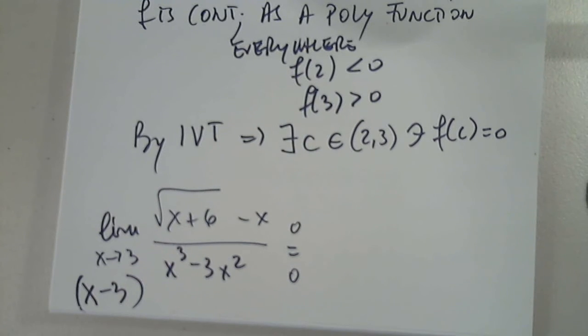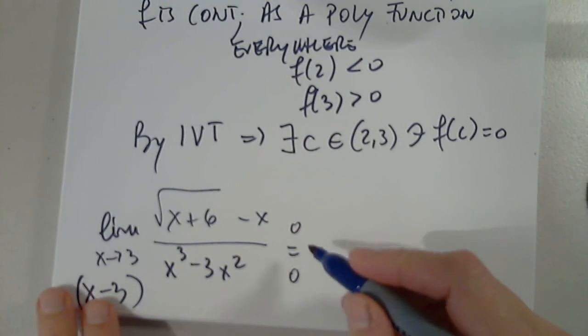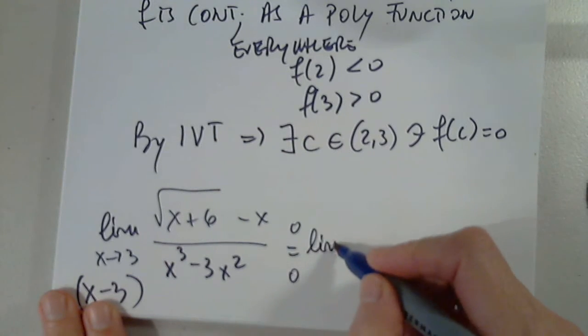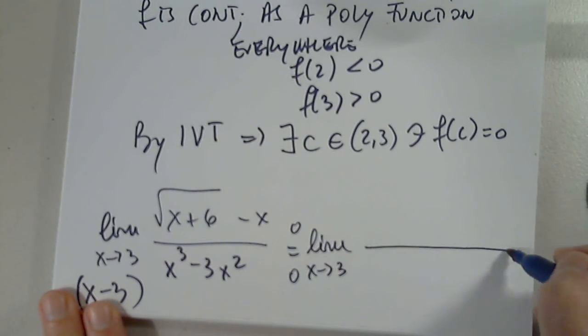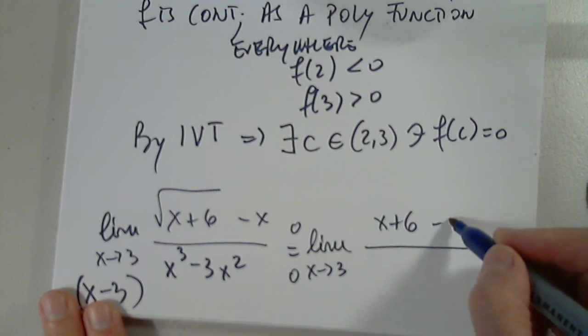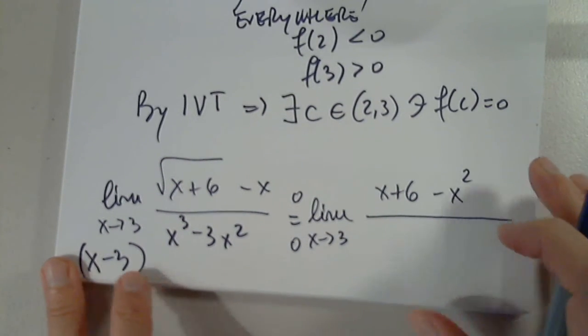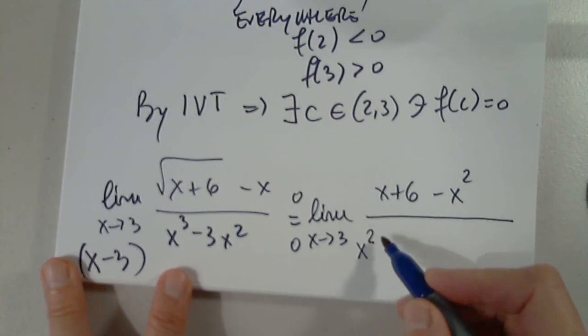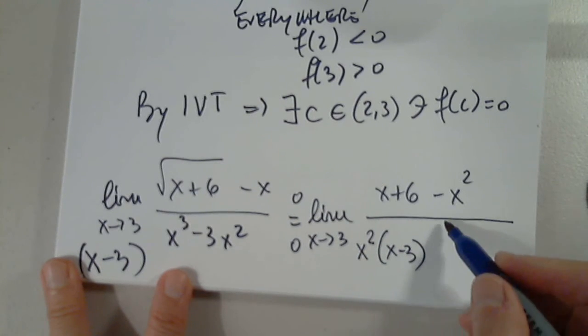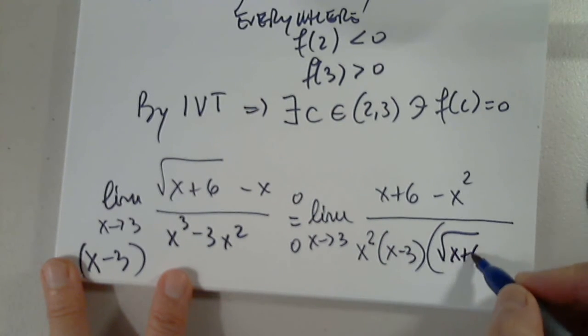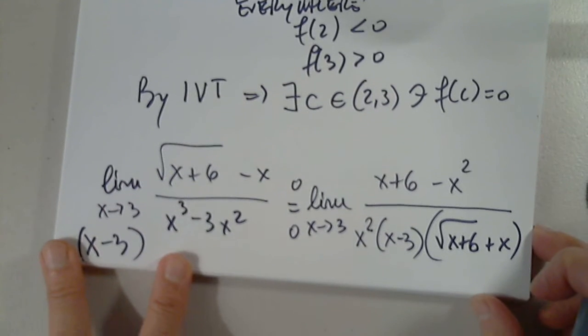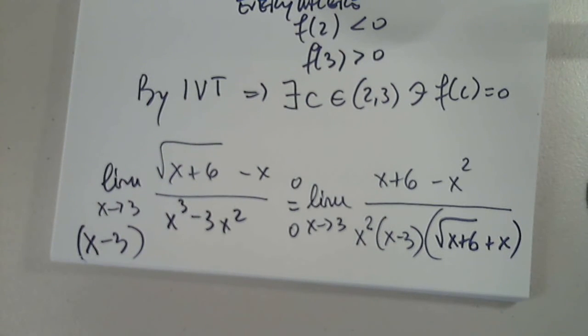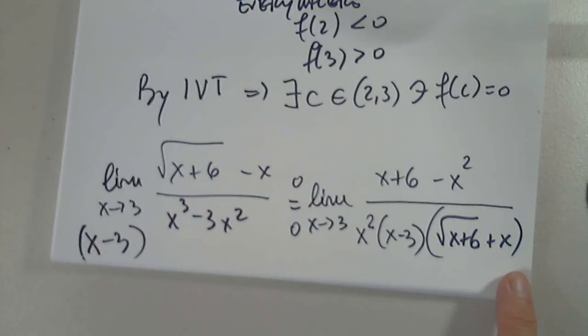That's my hope, to remove the problem. So then I would rationalize the numerator. So I have limit as x approaches 3 from square root of x plus 6 minus x. And the denominator I'm going to factor out x squared. And of course the square root of x plus 6 plus x. So I'm multiplying and dividing by the square root of x plus 6 plus x.